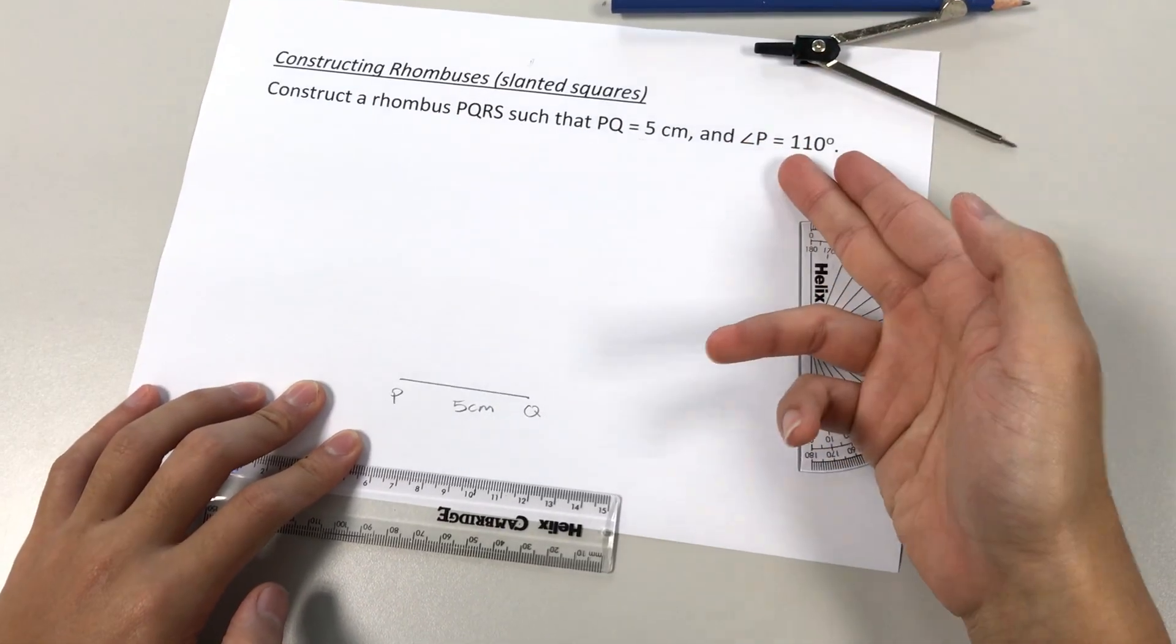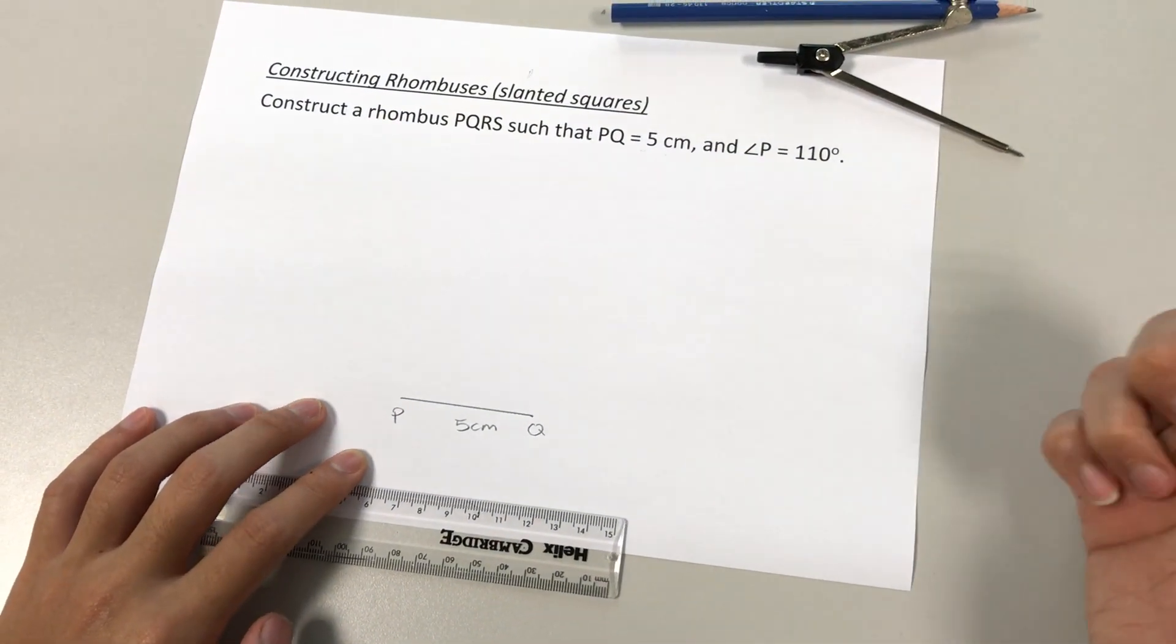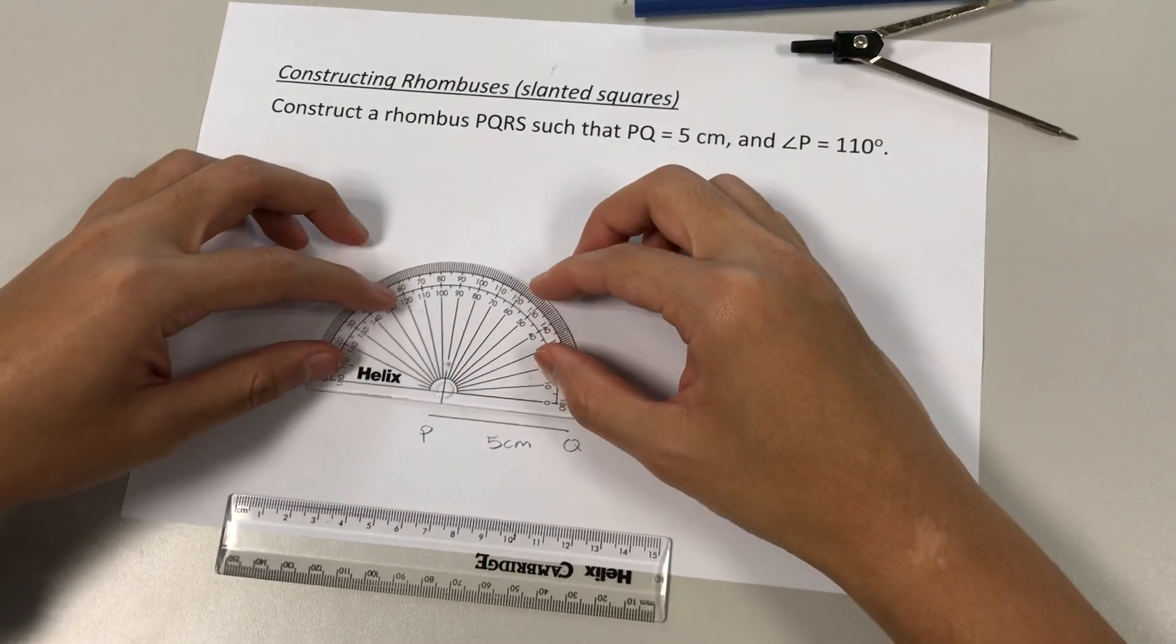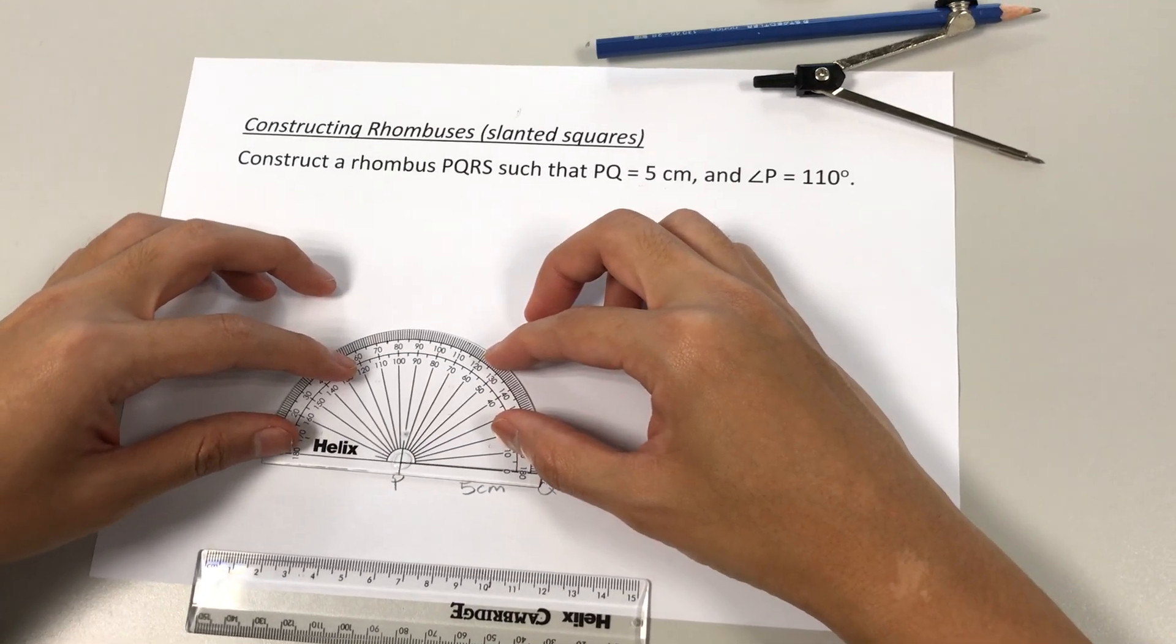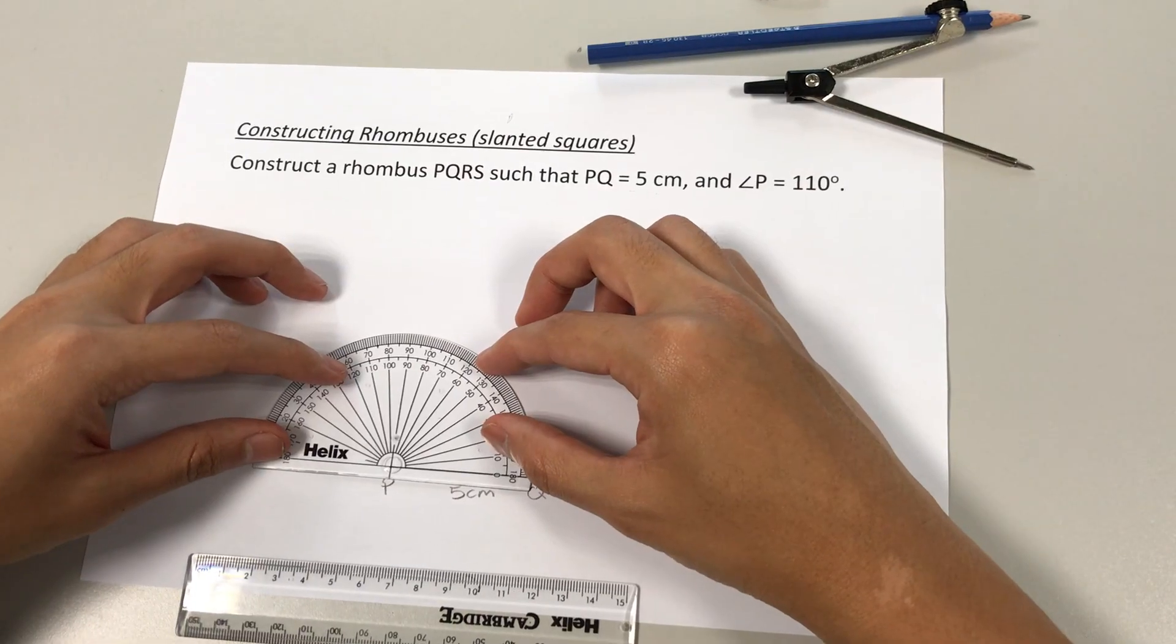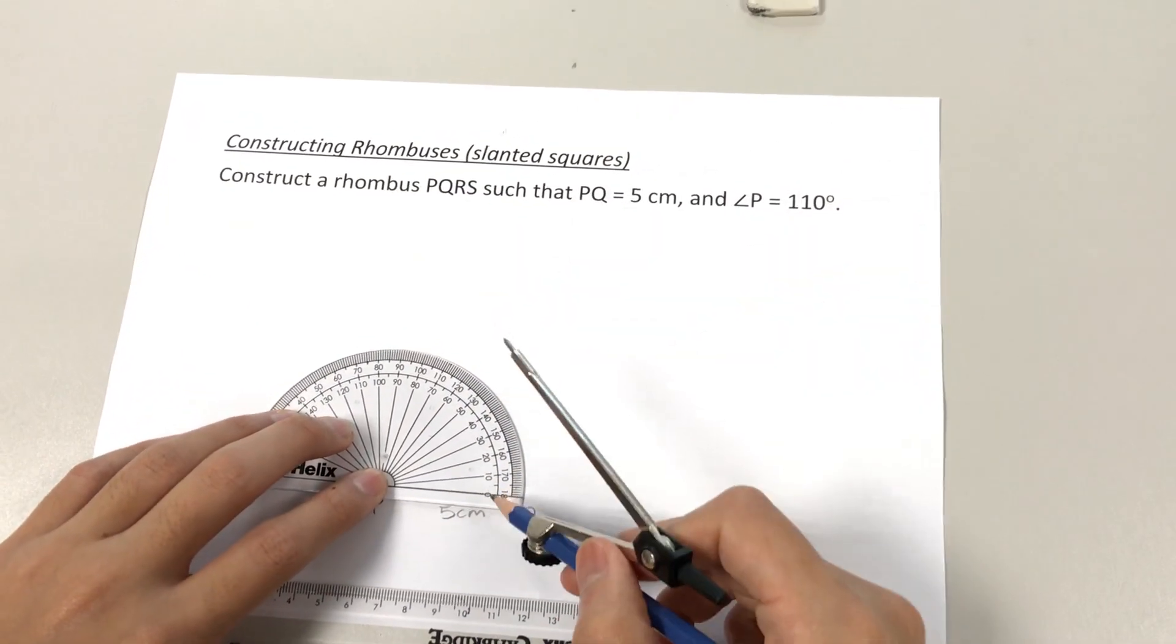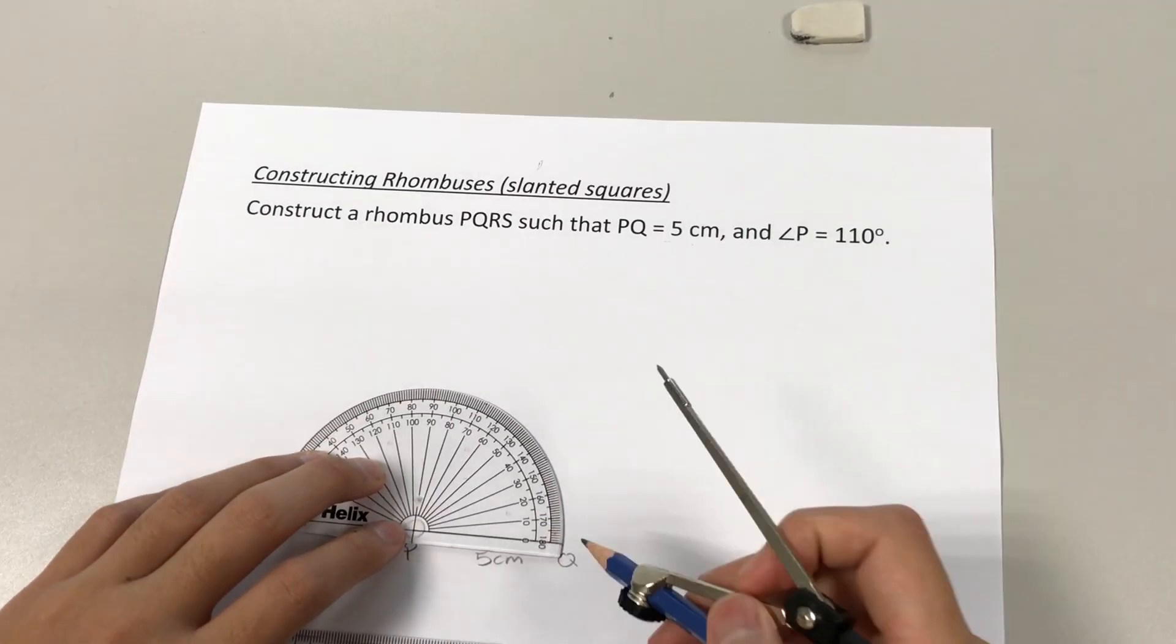Next, we'll mark out angle P, which is 110 degrees. Angle P is over here. We'll put our protractor on the line. Okay, from the 0 marking, we shall count 110 degrees.